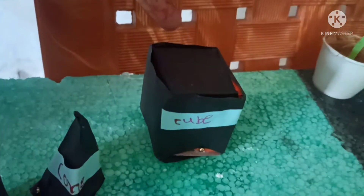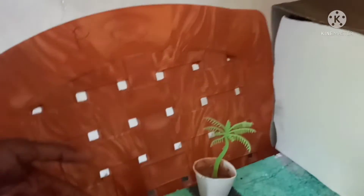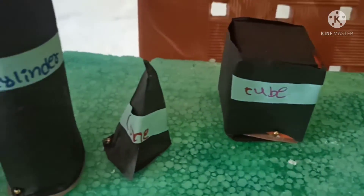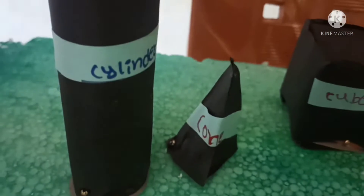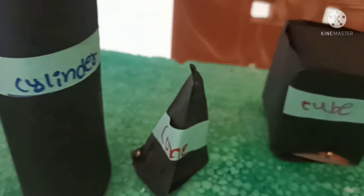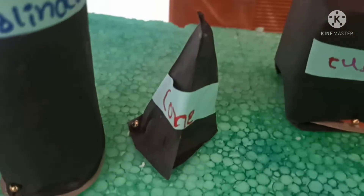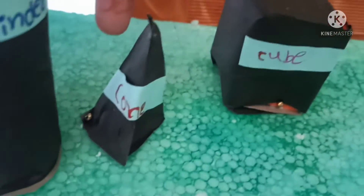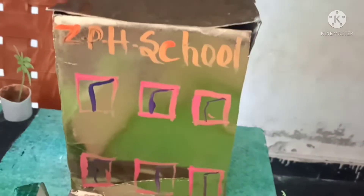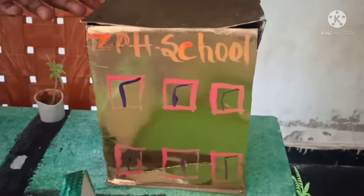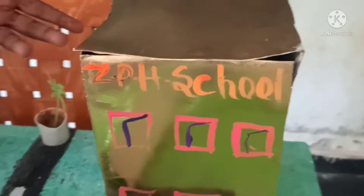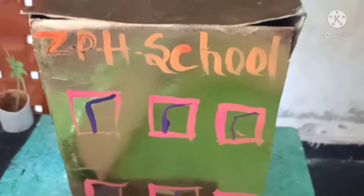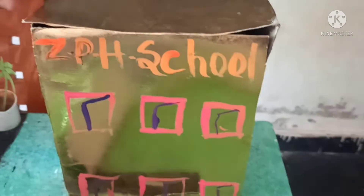Surface area of cube is equal to 4 times S square. Surface area of cylinder is equal to 2 pi R H. Total surface area of cuboid is equal to 2 of LB plus BH plus HL. This is the total surface area of cuboid.